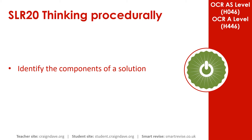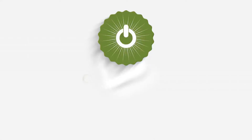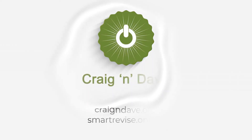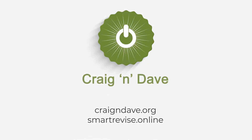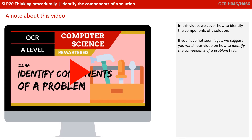This is one of four videos on thinking procedurally. In this video, we discuss identifying the components of a solution. If you've not yet seen it, we suggest you watch our video on how to identify the components of a problem first.